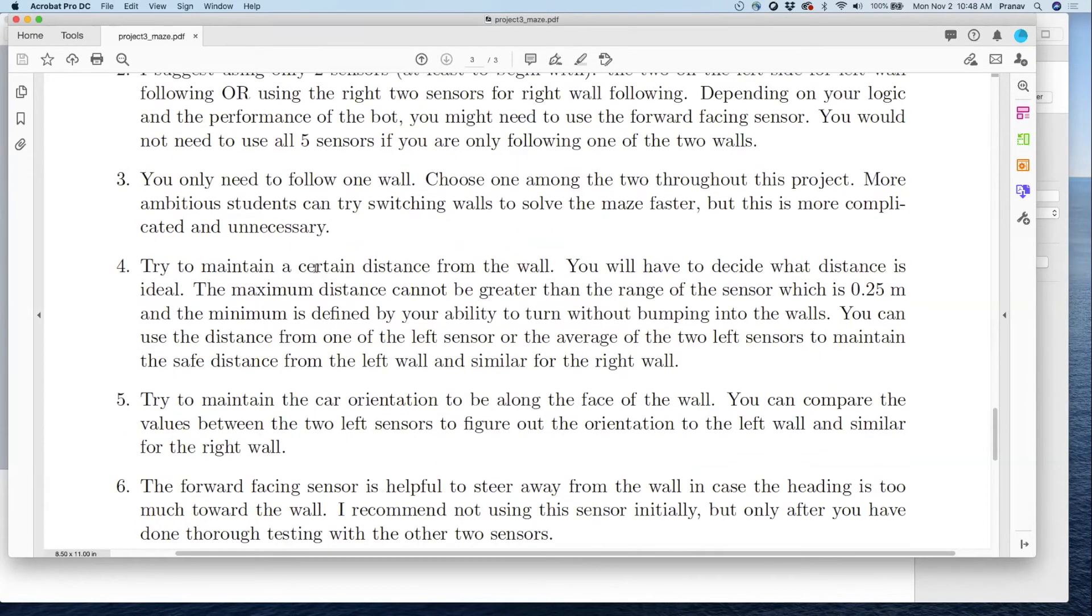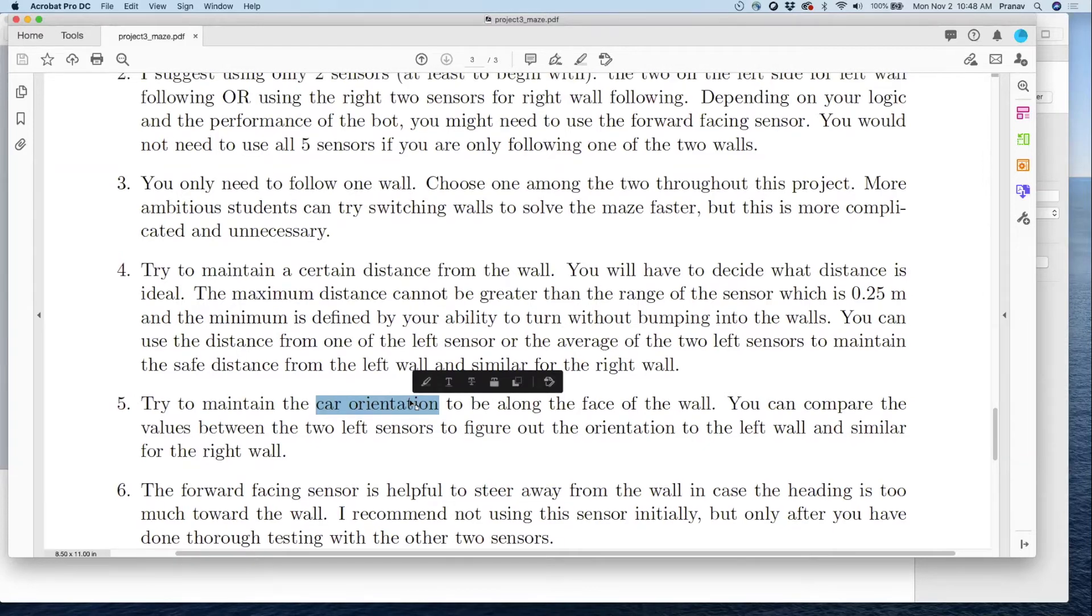I've given you hints on how to get the robot to follow the wall. Essentially, you need to maintain a certain distance from the wall, so you can use the distance measurement. But you also need to ensure that your car is oriented along the wall, it shouldn't be going away or towards the wall. The way you can do this is by ensuring that the measurements from two sensors on one of the sides are reading almost the same value. If they're not reading the same value, then you are going to the left or right.